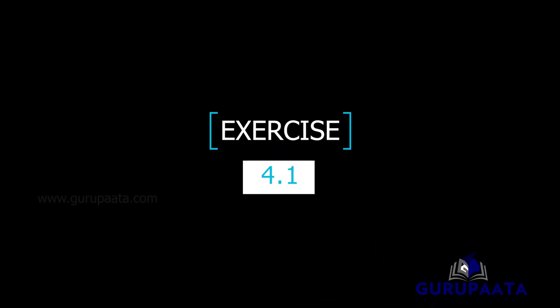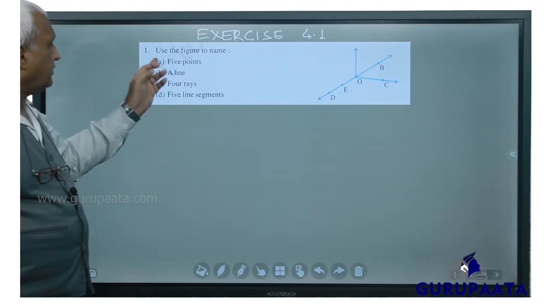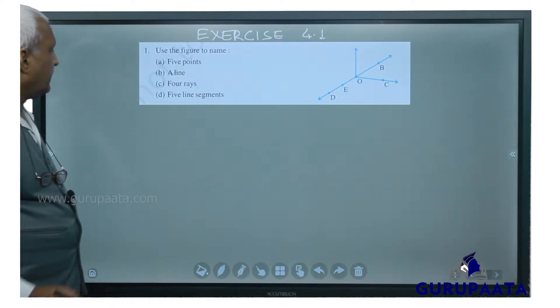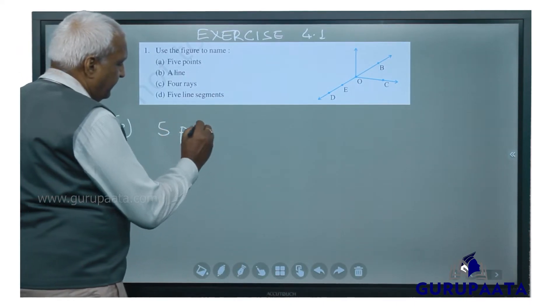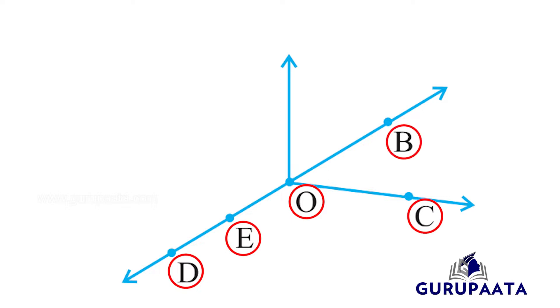Exercise 4.1, question number 1: use the figure to name 5 points. The 5 points are D, E, O, C, B. These are the 5 points in our available figure.